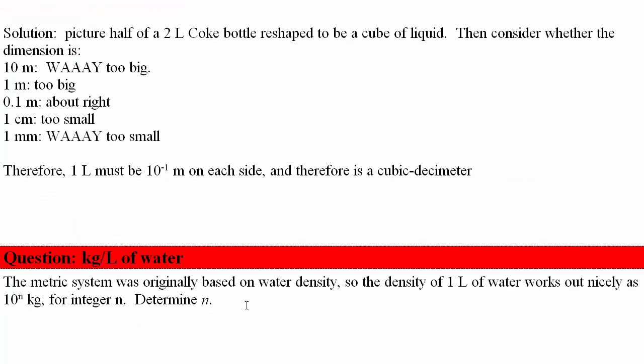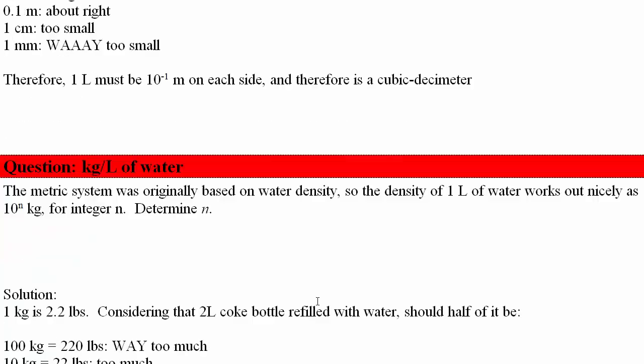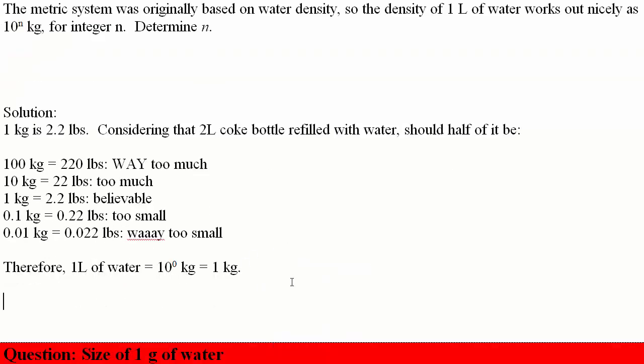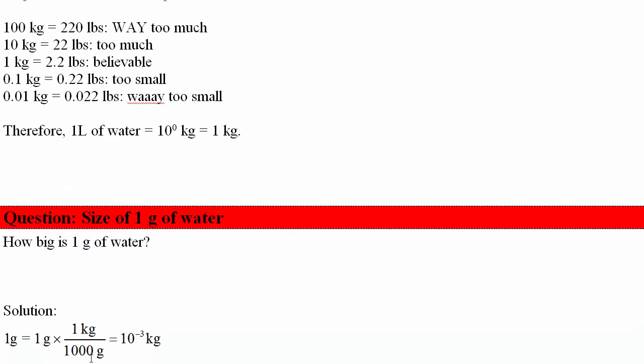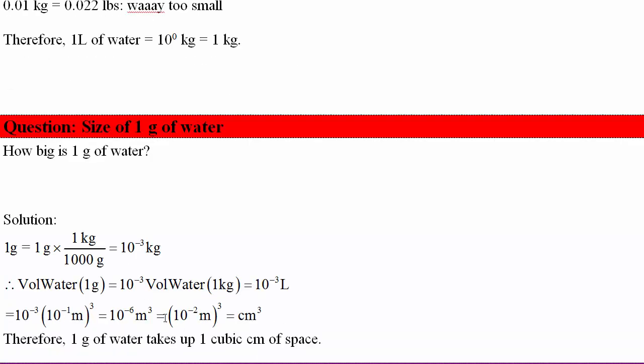Next part, how many kilograms are in a liter of water? The metric system was originally set up so the kilogram based on a liter. So some integer power of 10 kilograms is a liter of water. Figure out how many that is. So a hint would be think about the two liter bottle of Coke again. If you were to refill that with water or fill up half of that with water. Then is that roughly 2.2 pounds? Is it roughly 22 pounds? Is it 0.22 pounds? Well, a kilogram turns out to be 1 liter of water. How big is a gram of water? This one you can just directly calculate using the information that we have before. So a gram is a thousandth of a kilogram, 10 to the minus 3 kilograms. And we know that the volume of 1 kilogram would be a liter. So volume of a gram must be 10 to the negative 3 liters or a cubic centimeter. So a gram of water takes up 1 cubic centimeter of space.